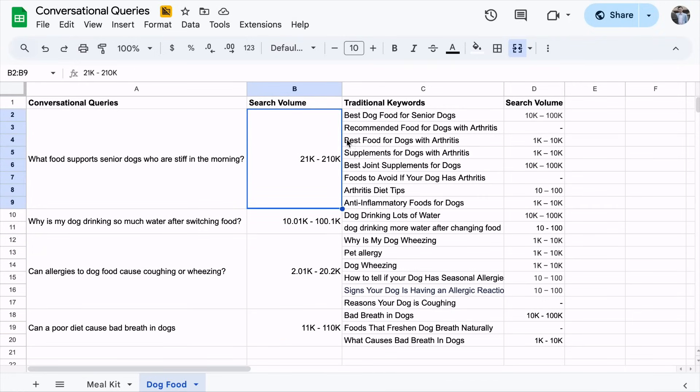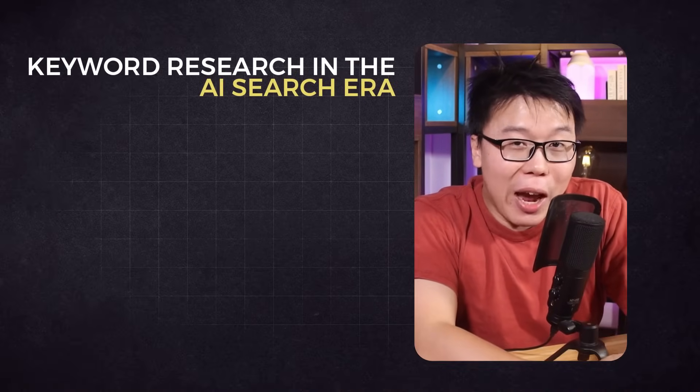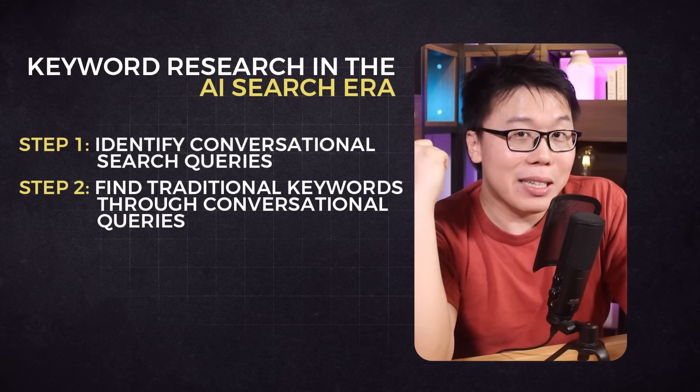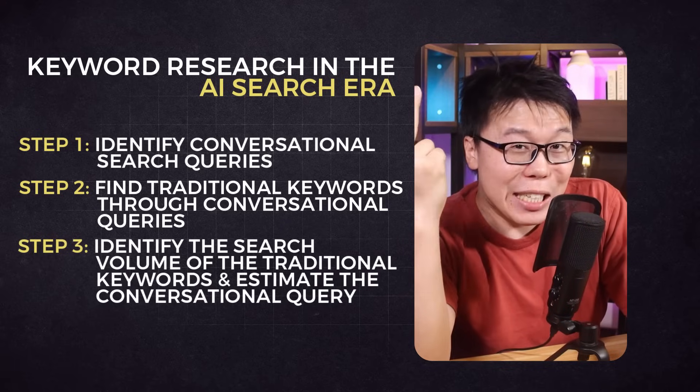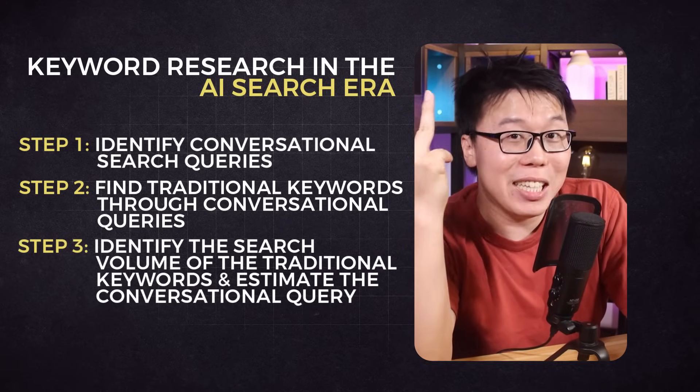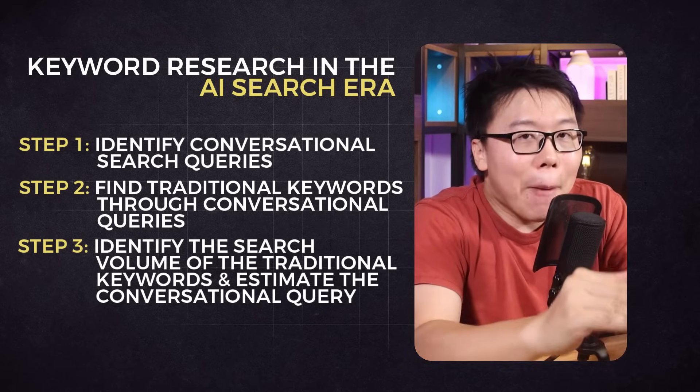So we are considering search intents from all angles for a conversational query to find its estimated search volume. Develop a customer avatar to figure out the conversational queries — what I've shown in step one is just one of the methods. Once you have done steps two and three, you can pick the group of traditional keywords with the most search volume to target first. Scrap the traditional keyword research mindset of targeting the least competitive keywords first, because the rules have changed. Target keywords that matter to your customers regardless of how competitive the traditional keywords are.